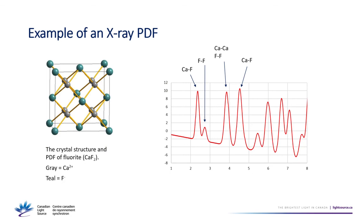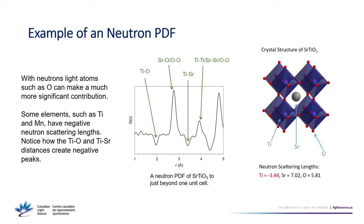Here's a simple example of an x-ray PDF using simulated data from fluorite (calcium fluoride). The first peak corresponds to the calcium-fluorine distance. The next peak is fluorine-fluorine, which is considerably smaller because fluorine scatters x-rays less strongly than calcium. Then you have a calcium-calcium and fluorine-fluorine overlapping peak, followed by second nearest-neighbor calcium-fluorine distances, and so on.